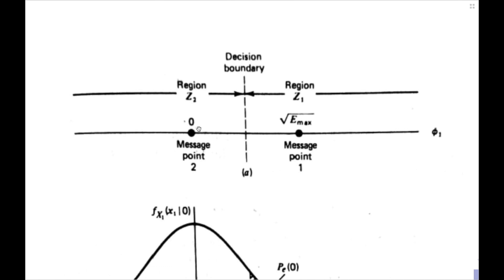We assume that binary symbols 0 and 1 occur with equal probability — a very important assumption for deriving the probability of error for both symbols. Correspondingly, the threshold used by the decision device is at the halfway point between the two message points, equal to root of E max divided by 2. We then draw an imaginary plane forming the decision boundary and partition the one-dimensional signal space into two decision regions, Z1 and Z2, corresponding to the nearest message points at root E max and 0 respectively.